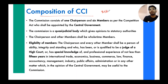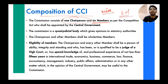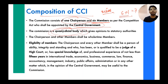Regarding composition — this can be asked in Prelims — the CCI has one Chairperson and six other members, making a total of seven members. The central government appoints them. It is a quasi-judicial body, meaning it is partially a judicial body — it can pass decisions or judgments, for example, fining the BCCI in the IPL matter.